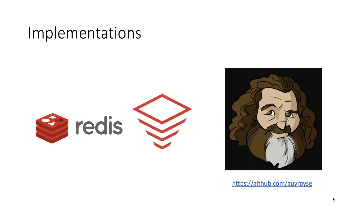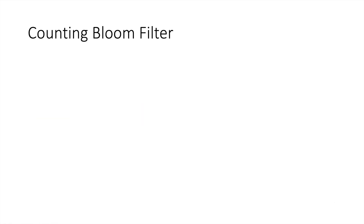Redis has a very good implementation of bloom filter, and you can find another implementation on GitHub. Now let us talk about counting bloom filters. Counting bloom filters are a modification of bloom filter which enables deleting a record from the bloom filter as well.